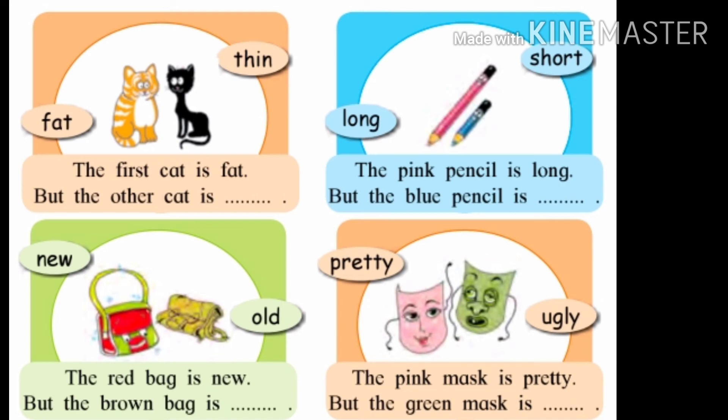Now come to the next picture. Two pencils are given and two words are given: long and short. The pink pencil is long but the blue pencil is short. Gulabi pencil hi lamb ahe, tar nili pencil hi short ahe — akkhod ahe. Long and short, both words are opposite to each other.